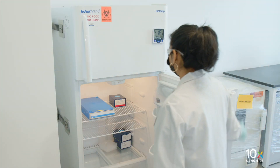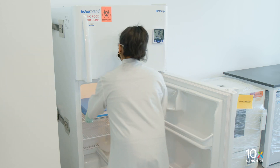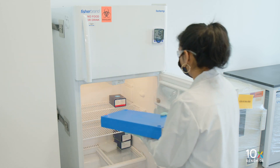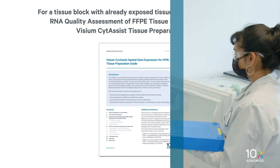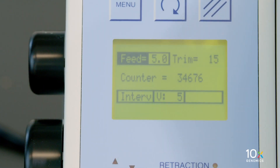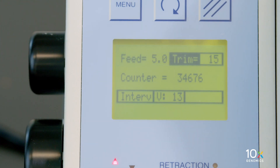Remove the tissue blocks from storage. For a tissue block with already exposed tissue, proceed directly to the RNA quality assessment of FFPE tissue block section in the Visium SideAssist tissue preparation guide. For a tissue block without exposed tissue, set the microtome to the 15 micron setting.